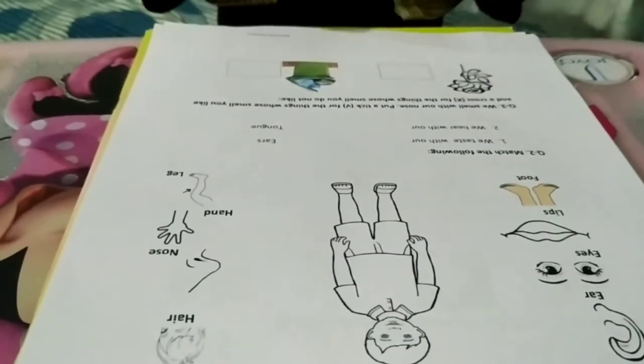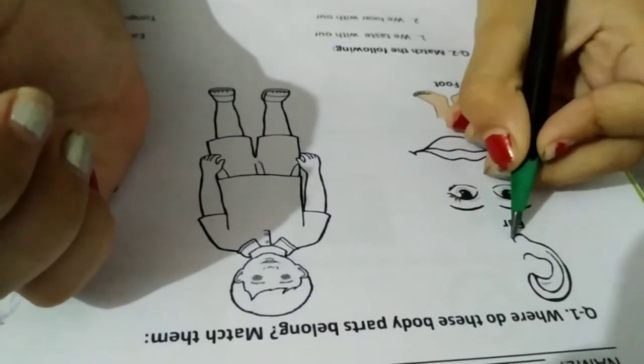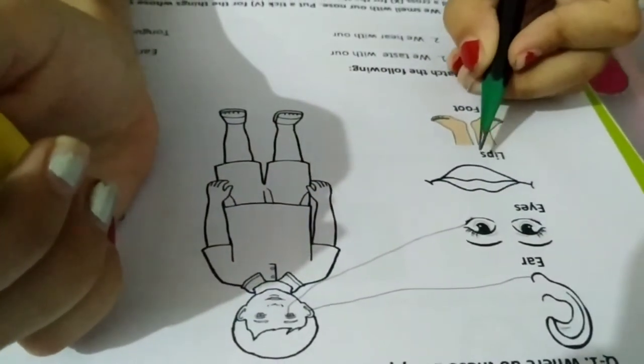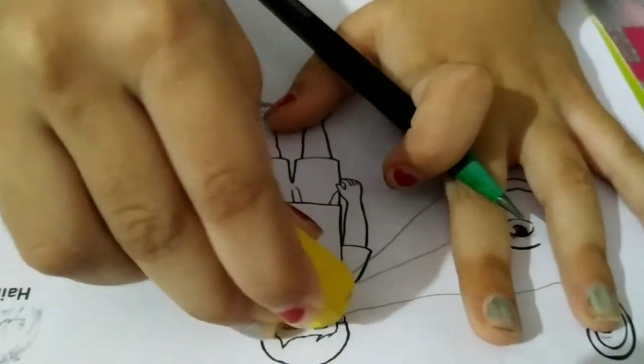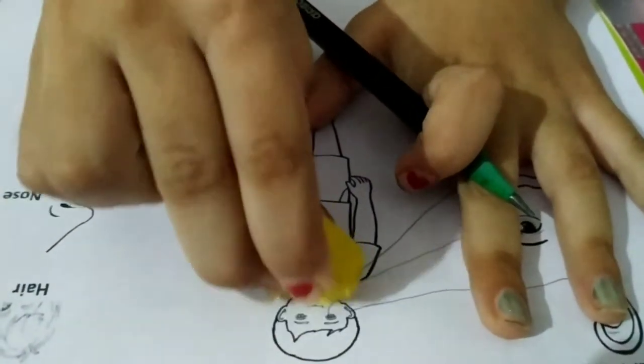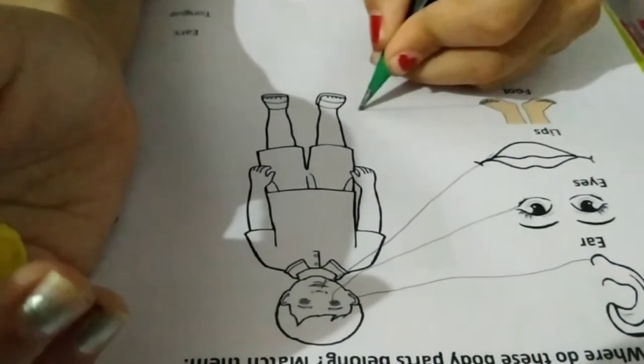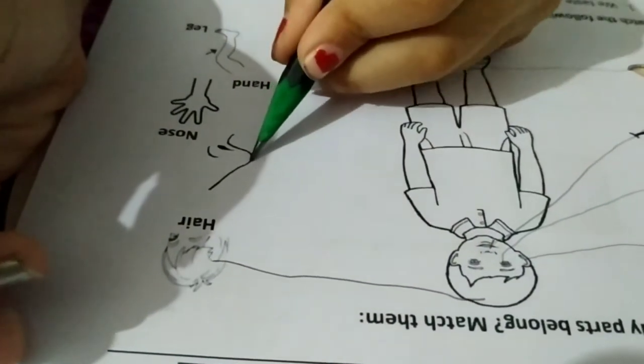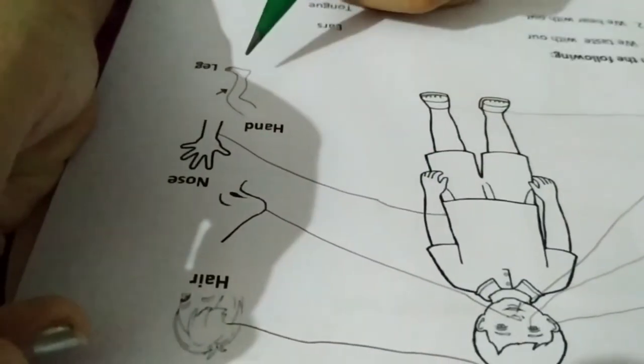Question 1. Where do these body parts belong? Match them. Ears, eyes, lips. Foot. Head. Nose. Hand. Leg.